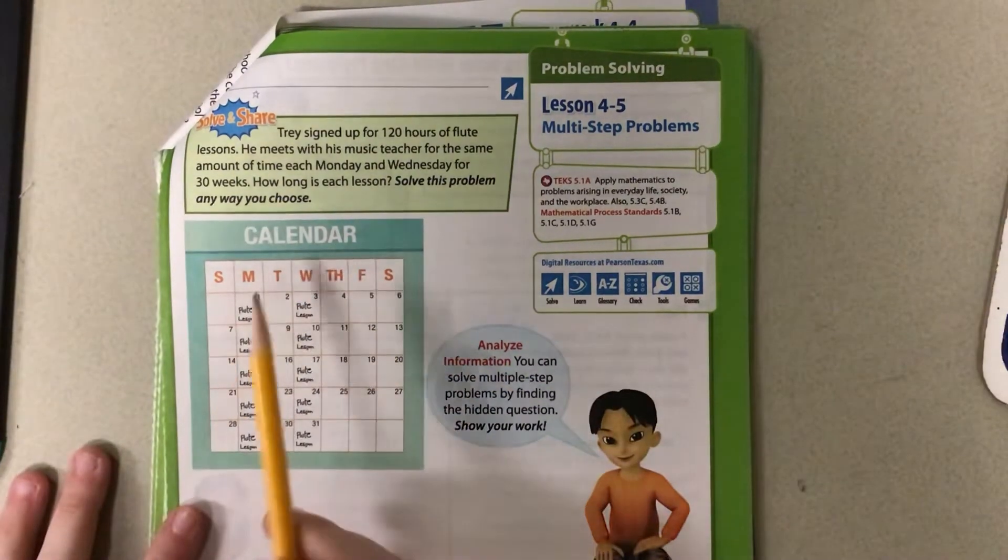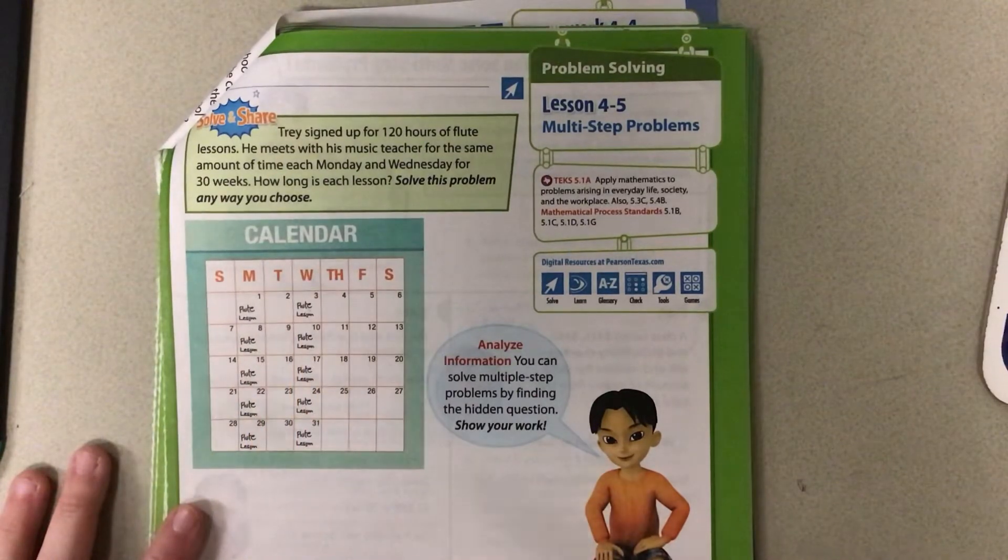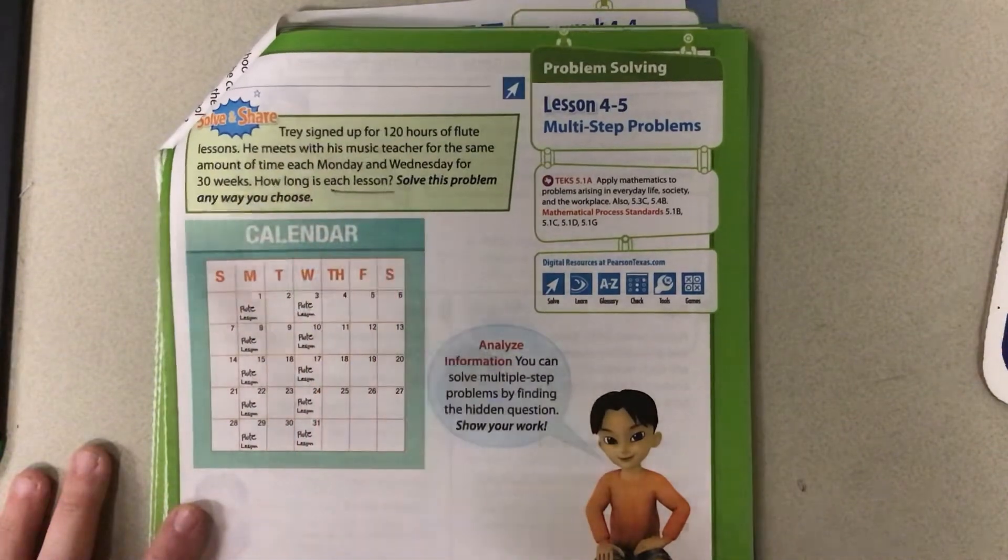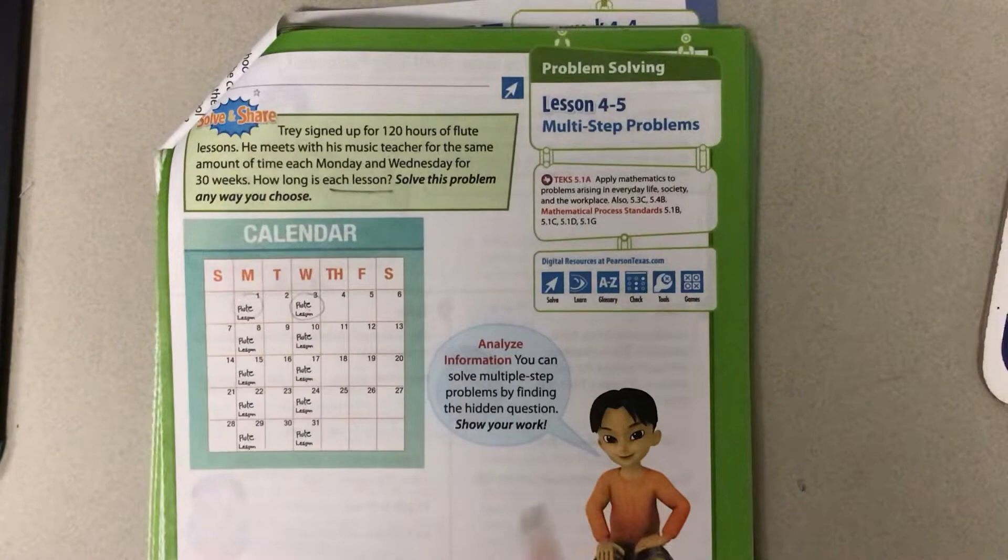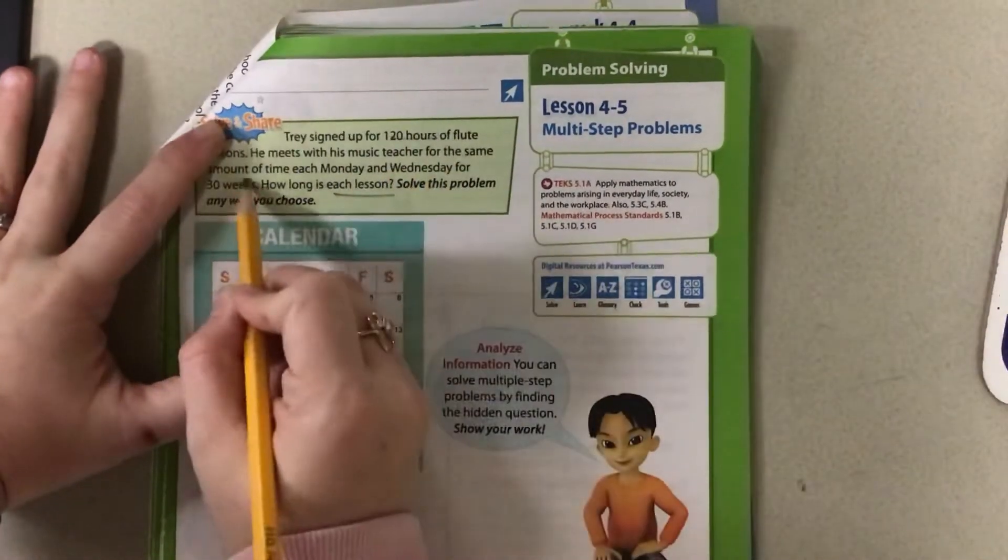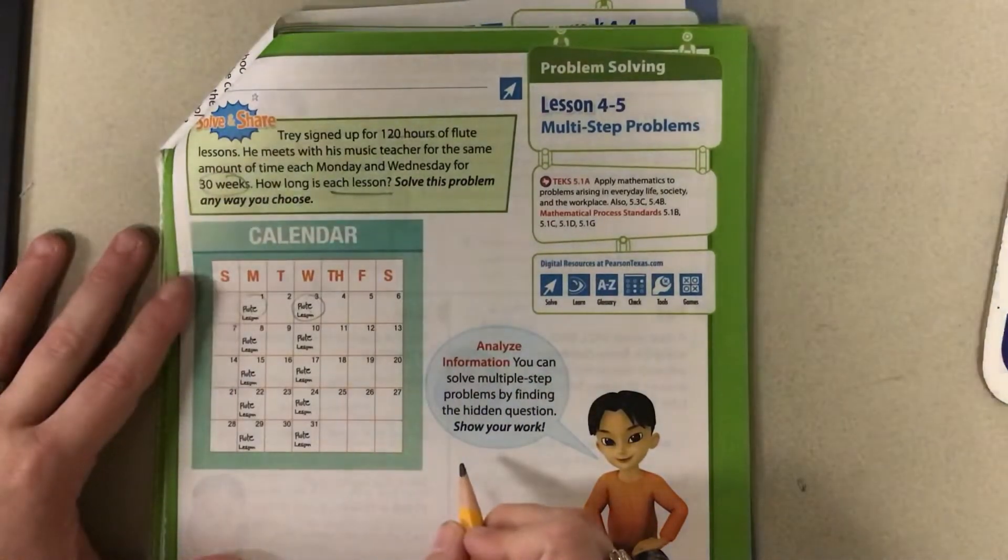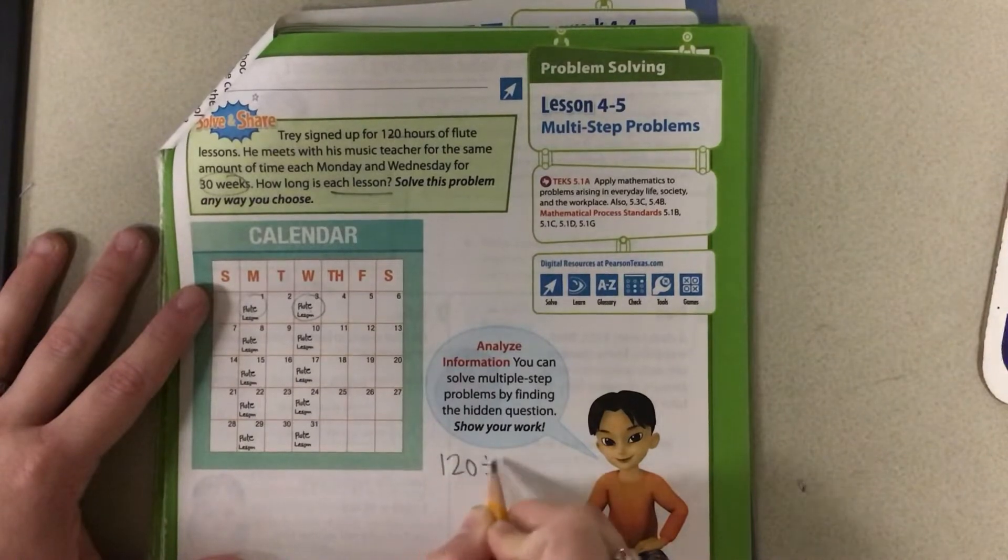So you can see he meets her twice a week. So we're going to have to figure out how much he meets each lesson. So if I know he signed up for 120 hours for 30 weeks, I know I'm going to divide that out to figure out how much per week. So I have 120 divided by 30.